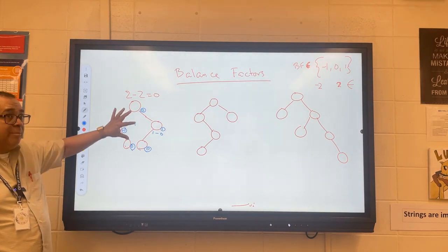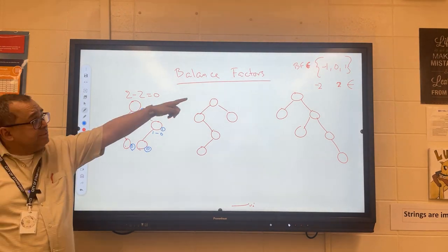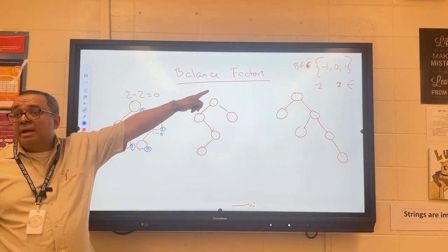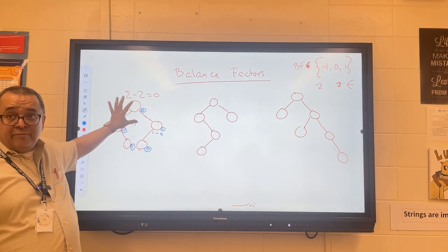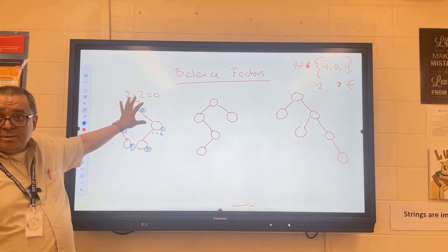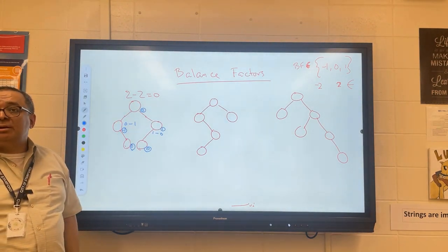Are all the balance factors for the nodes in the acceptable set? They are. Therefore, this tree is in balance right now, so we don't have to do anything to it.